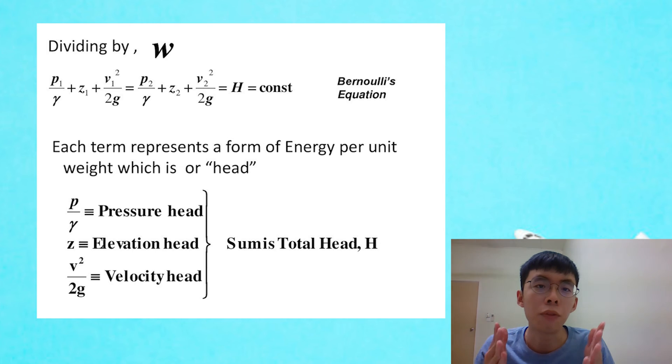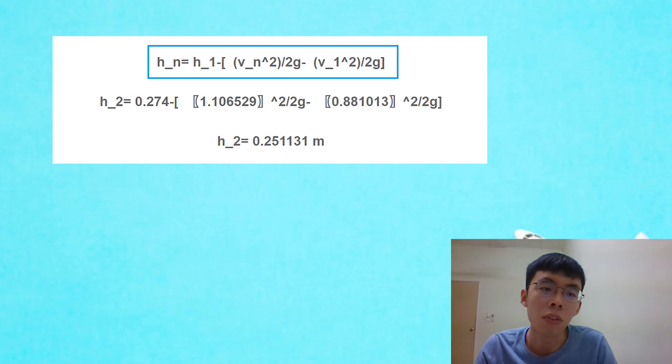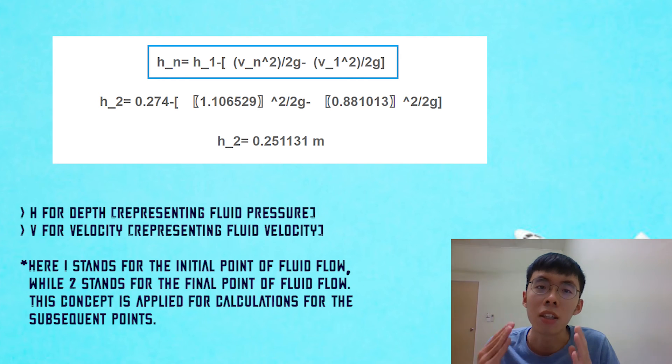Now this is where we apply the famous Bernoulli's equation. Here we have it in its energy equation form, or also known as the head form. Considering the fluid flows at the same elevation level, the elevation head remains constant. So does the total head, which is also constant along a streamline. This leaves us with only the velocity head affecting the pressure head.